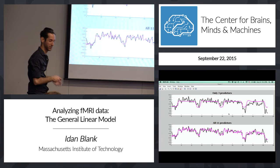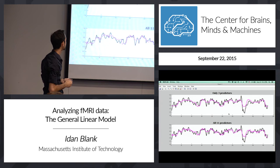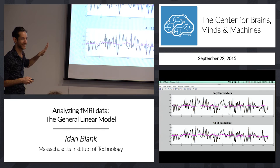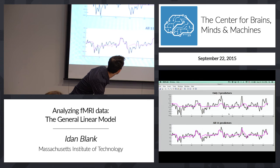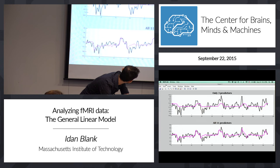Another example shows the approximation gets a little better. And here's real noise — a voxel that's really nothing — and adding more predictors doesn't make it any better. I just can't predict what is happening in that voxel. This was just to show how adding more predictors affects the results.